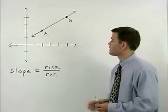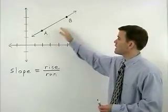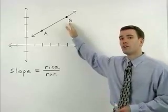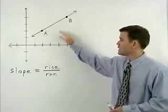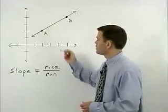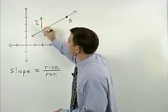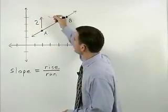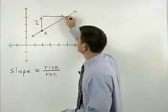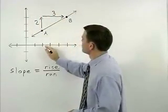So for the line you see here, let's use the points A and B to find its slope. To get from point A to point B, we would rise two units, one, two, and run three units, one, two, three.